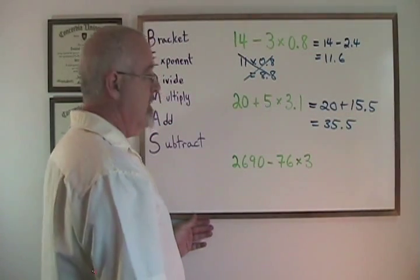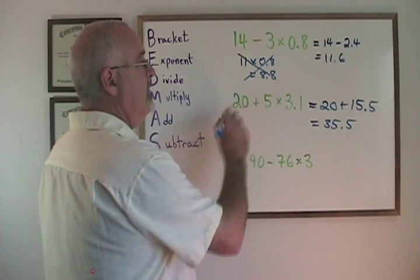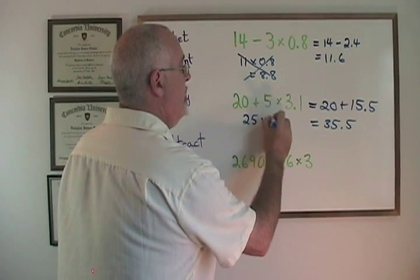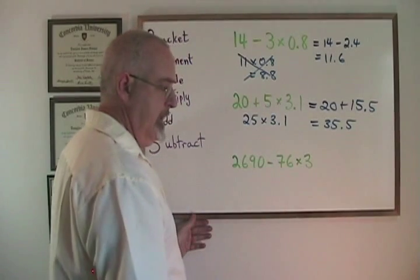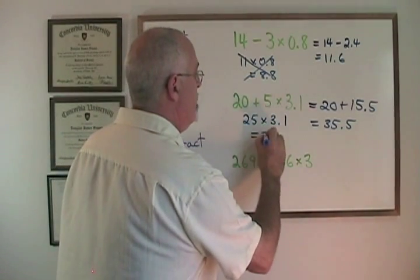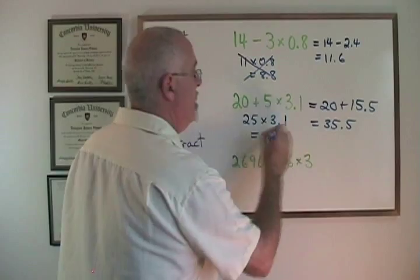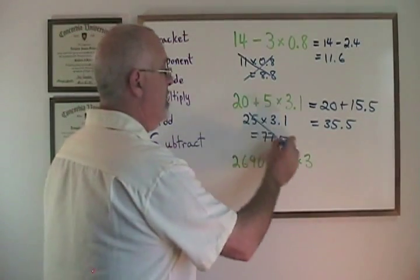If we do it wrong, we get 20 plus 5, which is 25, and 25 times 3.1 gives us 77.5. Wrong answer. We won't do it this way.